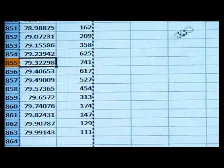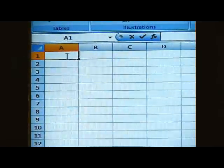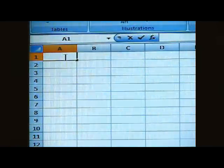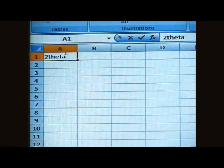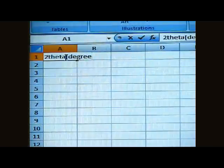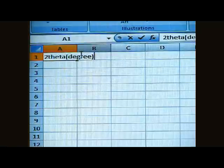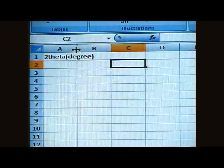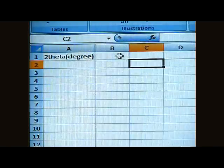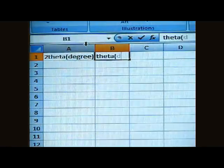Now we have to tabulate the given data. So open Excel. And first row, we write it as 2 theta, which is in degrees. In the next column, it is theta in degrees.